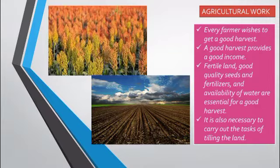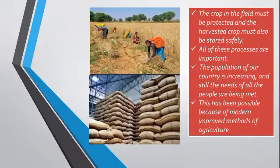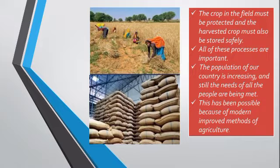It is also necessary to carry out the task of tilling the land. Tilling the land means the farmer needs to prepare the land for growing crops — this is the first preparation. It is very important that the crops in the field should be protected till harvesting, and when harvesting is completed the crops should be stored at a proper place so they do not get spoiled. Right from tilling of the land, to harvesting the crops, and storing them safely until they reach the market — all these procedures are very important for a good yield of production.